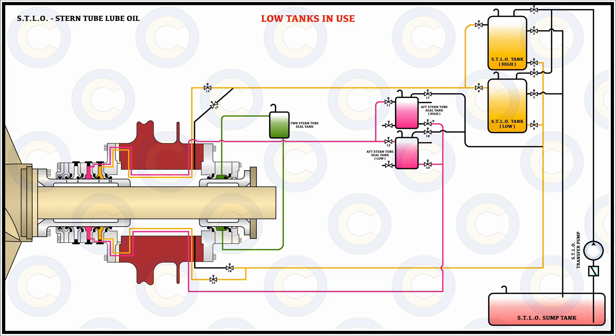Worn-out seals are a common fault in the stern tube system and can result from a number of factors. For example, seals may not have been adequately replaced at a major dry dock event, or minor liner markings acceptable at dry dock may have abraded further during service. Incorrect oil circulation due to incorrect header pressure, incorrect supply pressure, or prior emulsification due to condensate formation can also result in seal wear down.